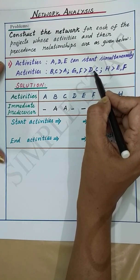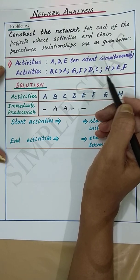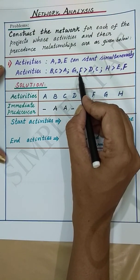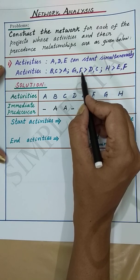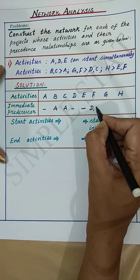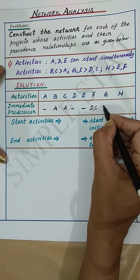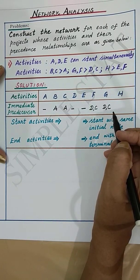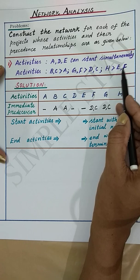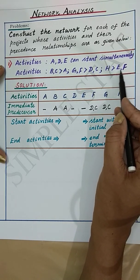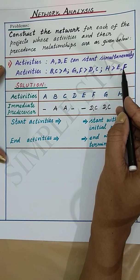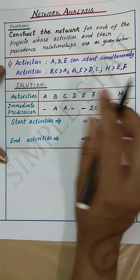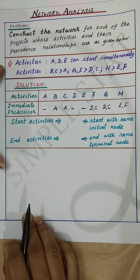Next, F and G follow D and C — this implies that activities D and C are the predecessors for activities F and G. And H follows E and F — this implies that activities E and F are the predecessors for activity H. Let's now identify the start activities and end activities.